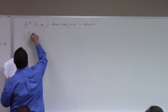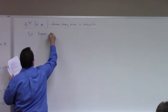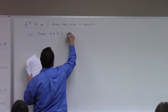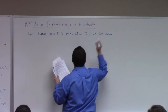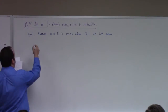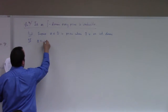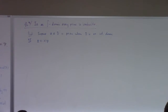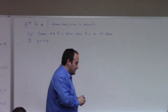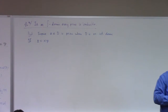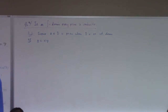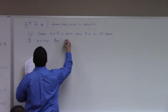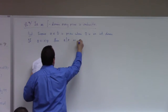Proof. Suppose a in D is prime, where D is an integral domain. If we have that a equals x times y, our goal is to show that one of those factors is a unit — that's what it takes for a to be irreducible. From the fact that a is prime, a equals xy implies that a divides x or a divides y.